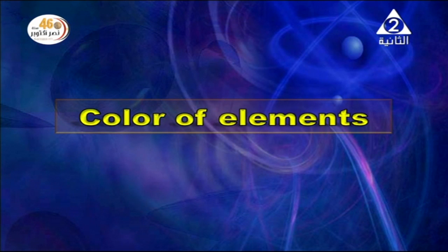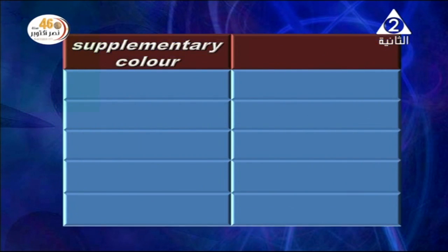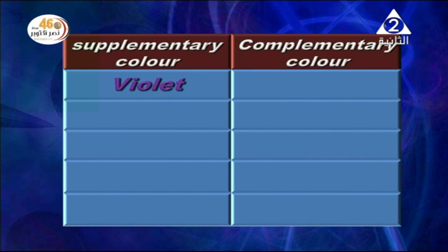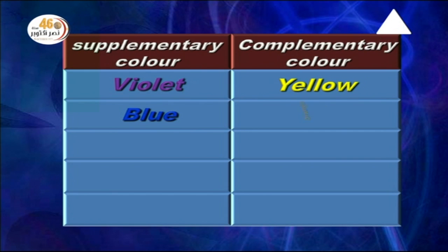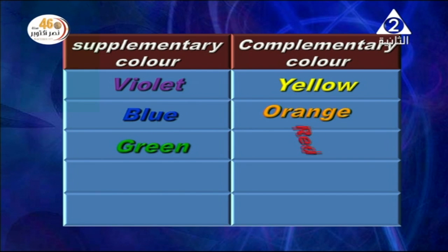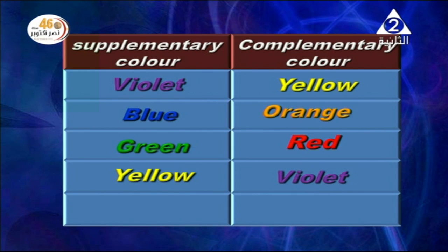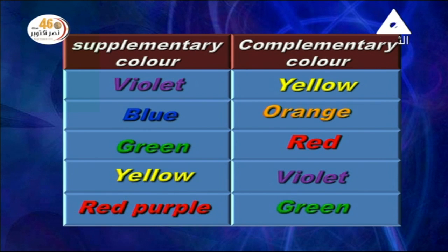To know the apparent color, you must know both supplementary and complementary color pairs: violet absorbed → yellow reflected; blue absorbed → orange reflected; green absorbed → red reflected; yellow absorbed → violet reflected; red-purple absorbed → green reflected.